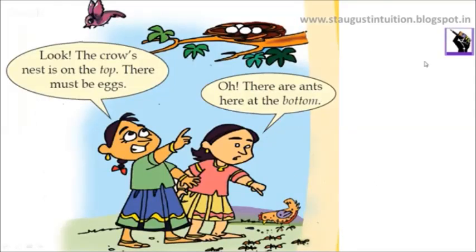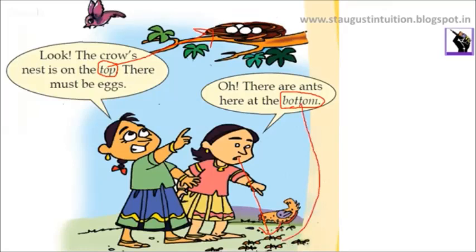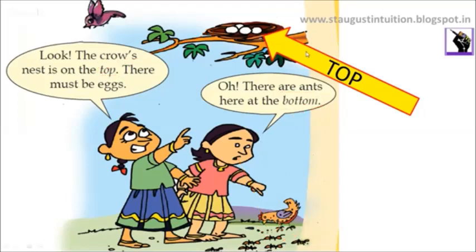Now let's go to the textbook. Look — the crow's nest is on the top. There must be eggs. There are ants here at the bottom. Now there are some ants here at the bottom.